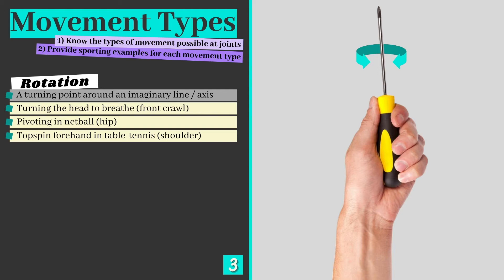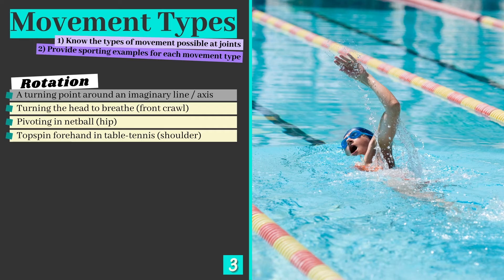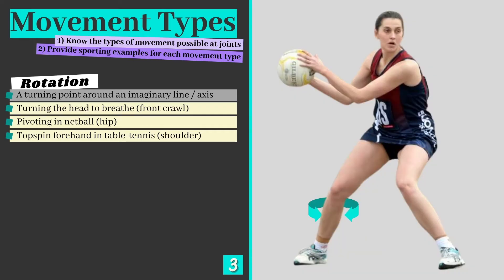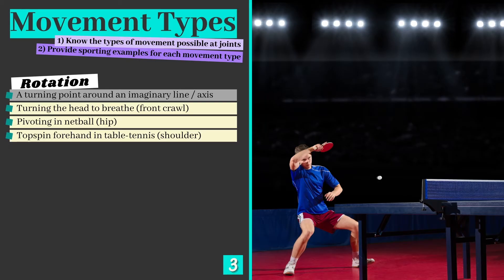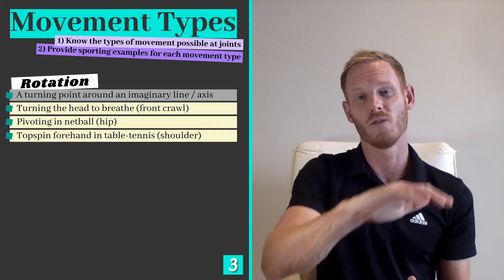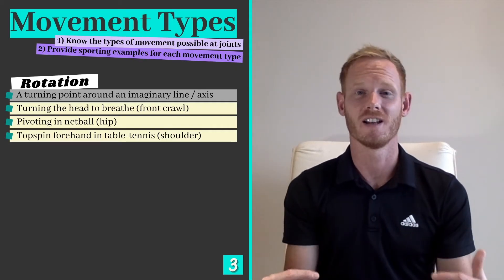Rotation is our next type of movement — simply a turning movement around an imaginary line or axis. Examples include turning the head to breathe during the front crawl, pivoting in netball where the standing foot stays grounded and the rest of the body turns to find a pass to a teammate, and performing a topspin forehand in table tennis. This skill involves rotation at the shoulder joint as the player turns the angle of the bat to generate topspin.